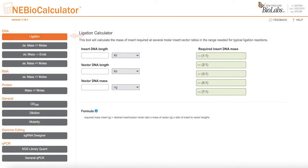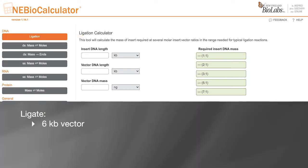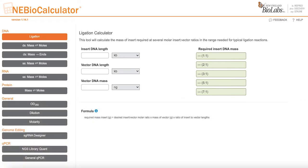In this tutorial, we will plan a ligation reaction where we ligate a 6 kilobase vector fragment and a 2 kilobase insert fragment. First, click on the ligation calculator module.